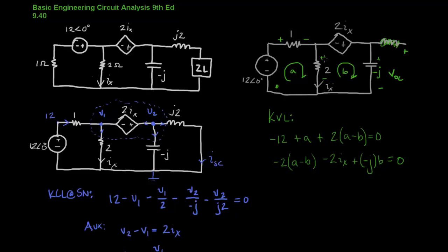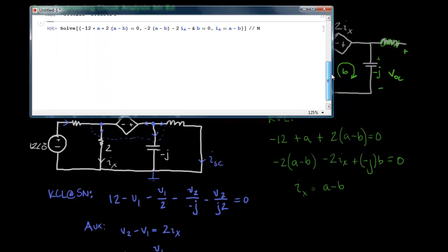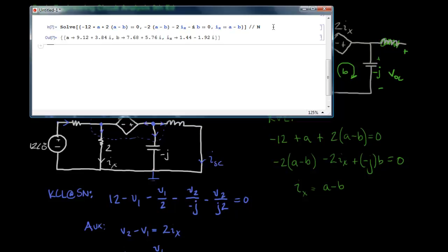And finally, because I have this dependent source, I'm going to have an extra equation. And that extra equation says that IX is equal to A minus B. So I have 3 equations, 3 unknowns. And now I can plug it into Mathematica and get a result. I've set up the equation to be solved right here. My 3 equations. And I solve them.